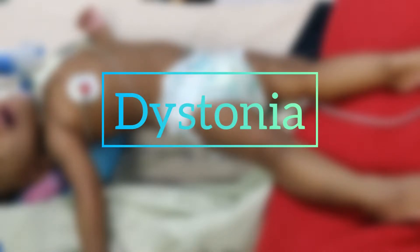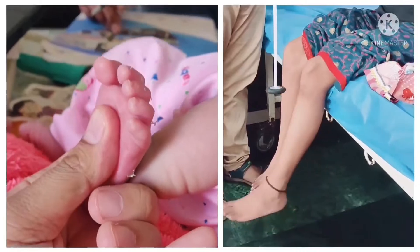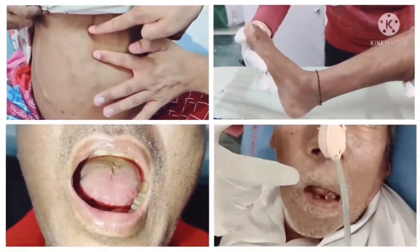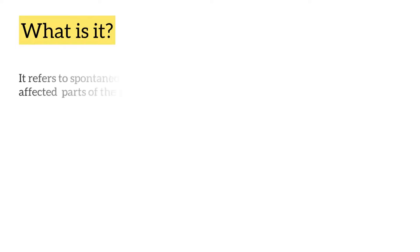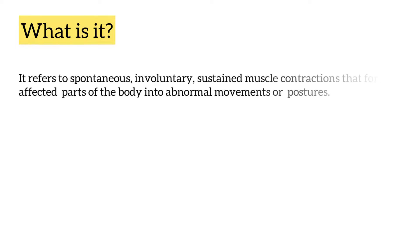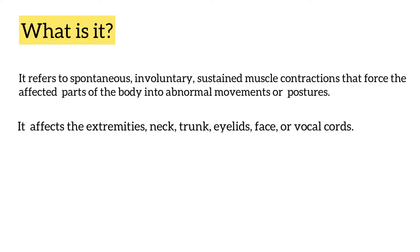Hello friends, in today's video we are going to talk about dystonia. It refers to spontaneous, involuntary, sustained muscle contractions that force the affected part of the body into abnormal movements or postures. It affects the extremities, neck, trunk, eyelids, face, or vocal cords.